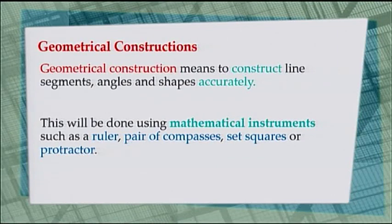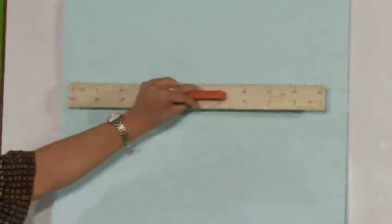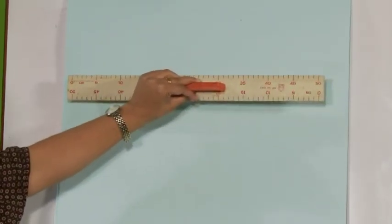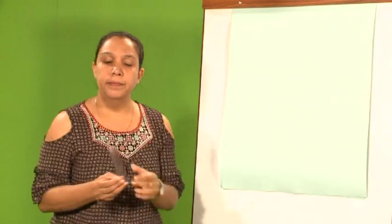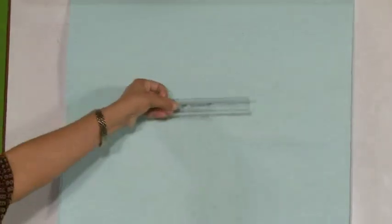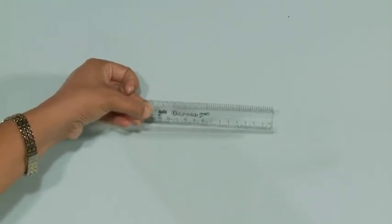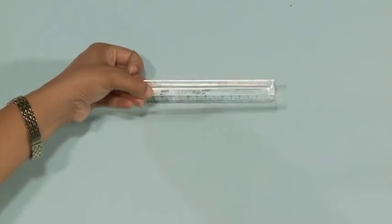We are going to make use of mathematical instruments. We are going to use the ruler, the compasses, the set squares and the protractor. The first instrument is the ruler. You all know what a ruler is — this one is a big one, but you will use a smaller one. The ruler will be used to draw lines and to measure distances.